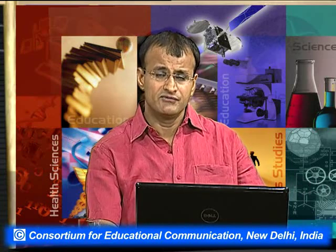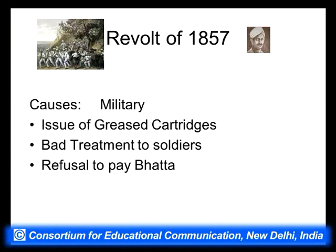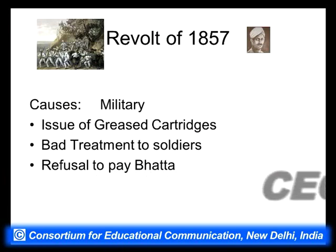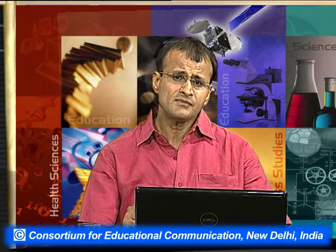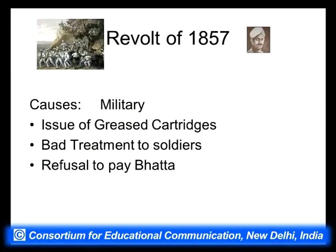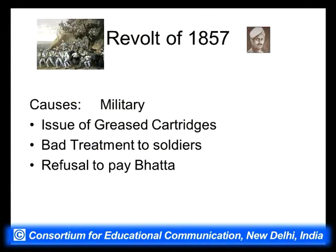Then we come to the revolt of 1857 — the first armed struggle waged at such a huge scale. There were a number of causes. The most immediate was the greased cartridges issue: the new Enfield rifle's cartridge had to be bitten off by mouth, and it was rumoured to contain pig fat or cow fat, which was not acceptable to both Hindus and Muslims. The soldiers were also racially maltreated and not treated as equals to the English, and they were not given bhatta when travelling to foreign locations.